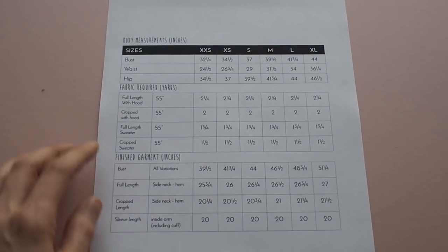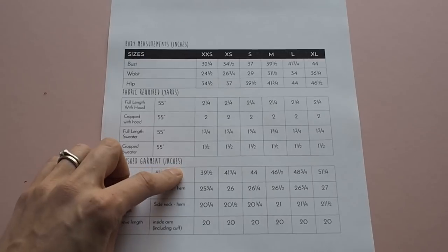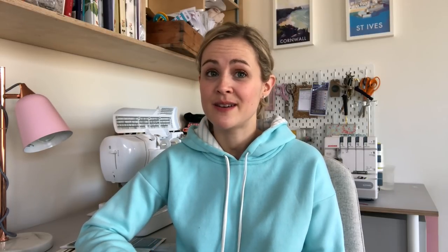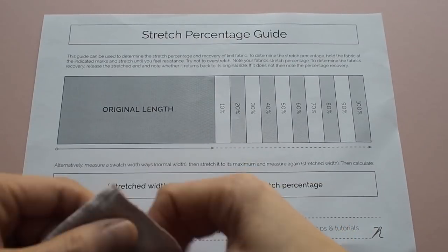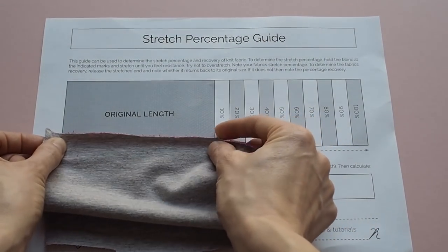The first one is always to check the finished garment measurements compared to the actual body measurements, because that's going to give you an idea of how loose or how fitted the garment is. Then check the amount of stretch that's recommended for the pattern as well, so when you get your fabric it's got to be stretchy enough — or it might not need to be that stretchy depending on the style.